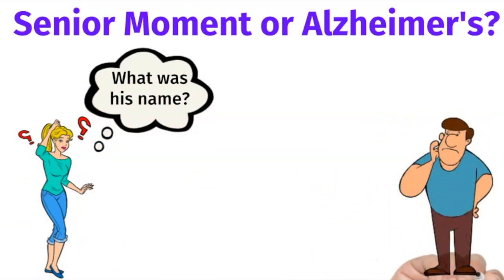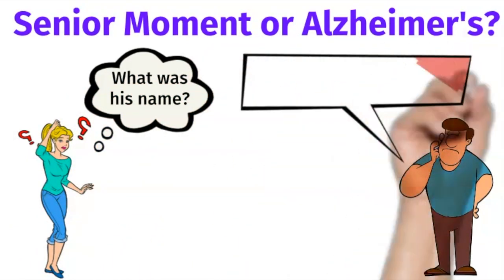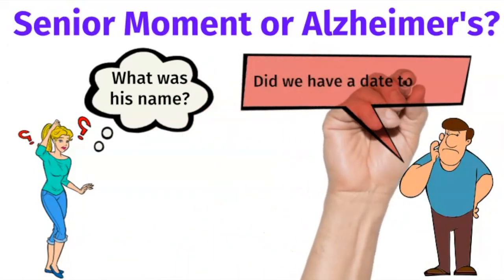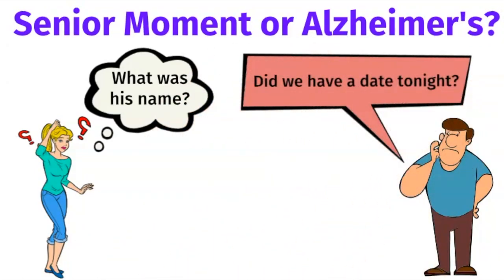Alzheimer's is sneaky. You can go for years ignoring minor slip-ups and senior moments before realizing it's actually Alzheimer's disease.